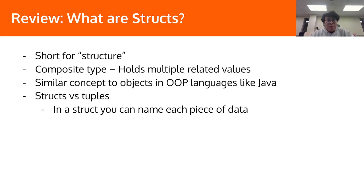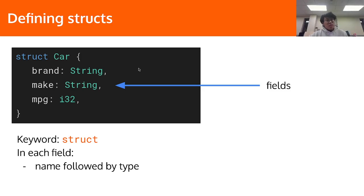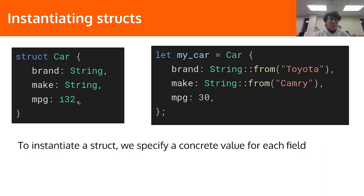Just to do a quick recap of what we covered last week: structs are composite types, they hold multiple related values. The key difference between structs and tuples is that in a struct, you name each piece of data, which is called a field. This is how we define a struct — we have a name, and then the different fields and their types. This is the type of the struct, and this is an instance of the struct, where we create a specific instance with specific values for each field.